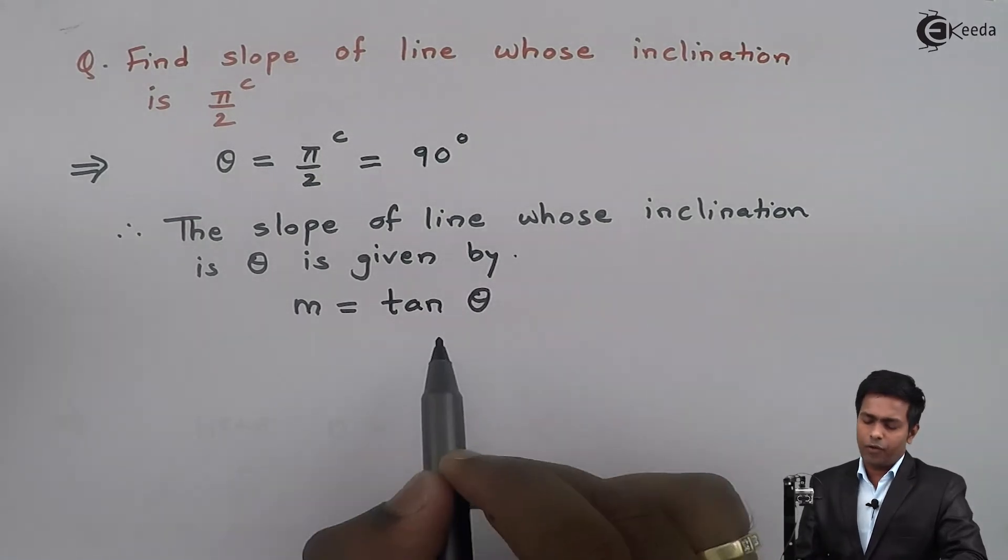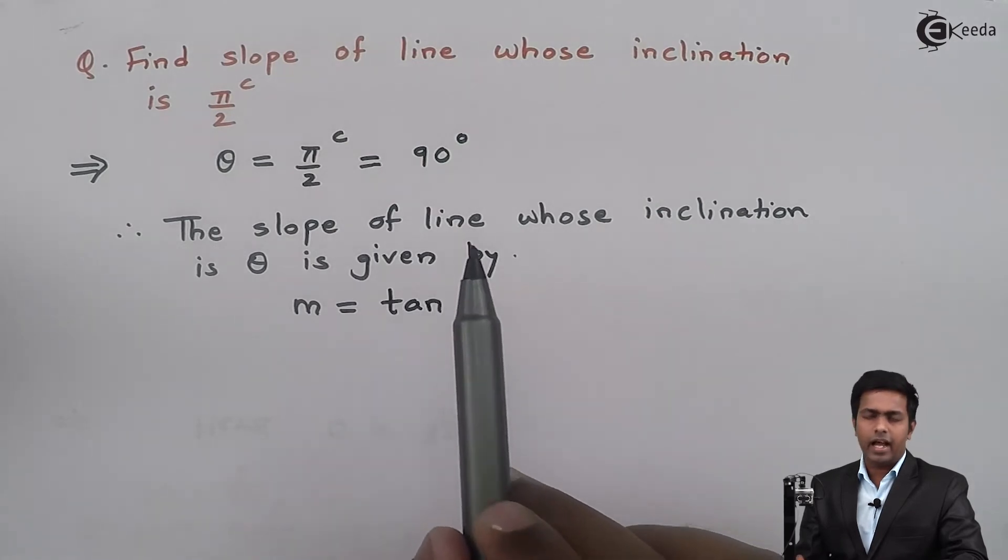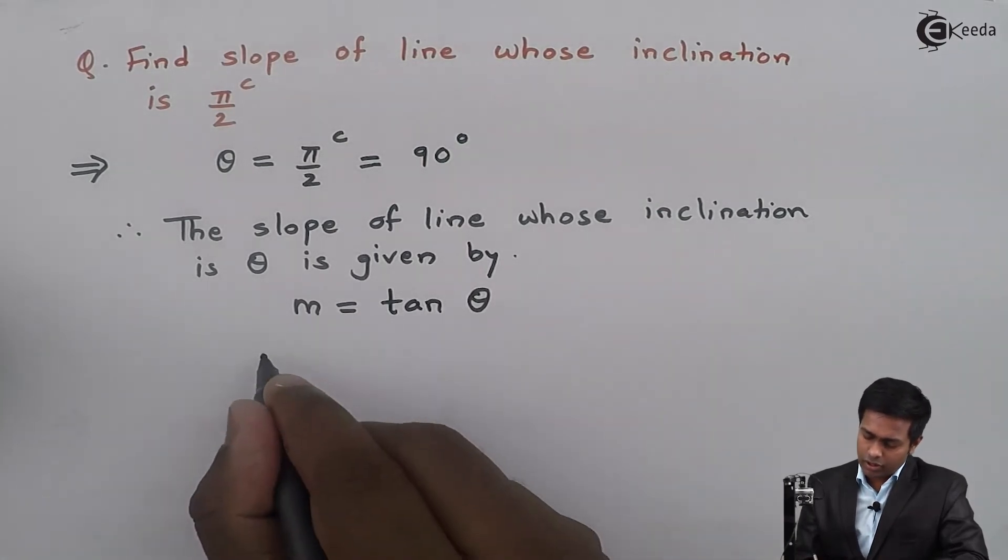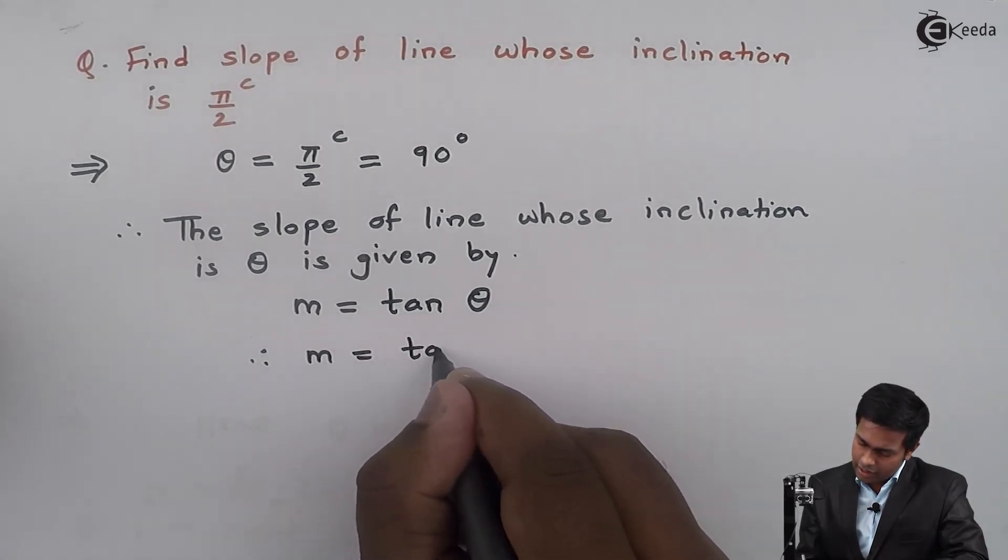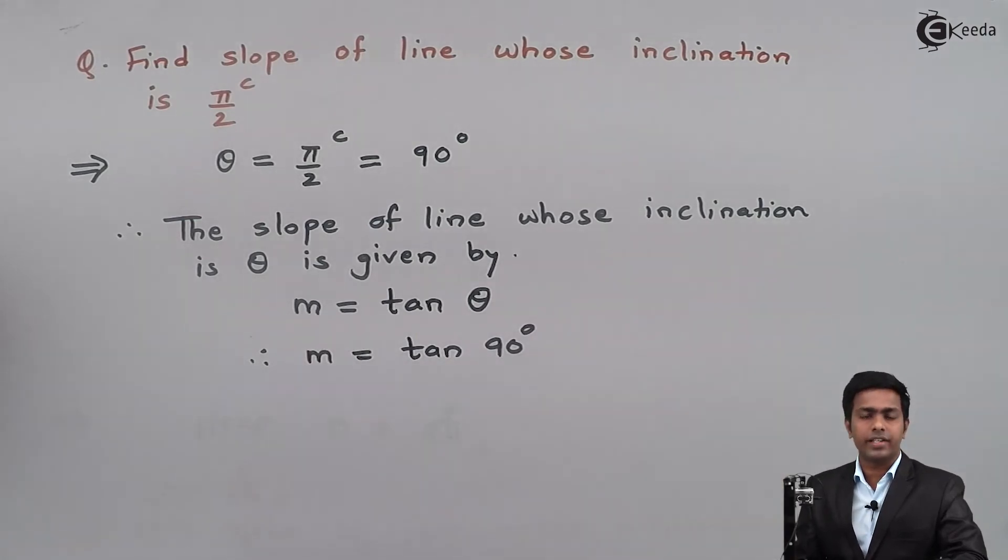This is the formula to find the slope of a line making an angle theta with the x-axis. Therefore, m = tan 90° or tan π/2 radians.